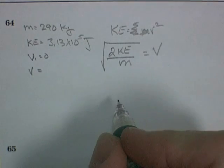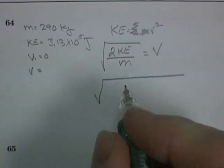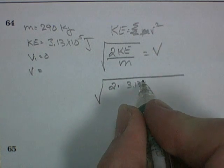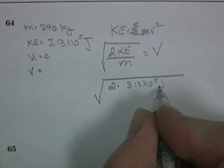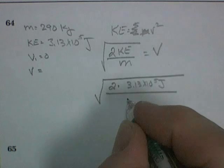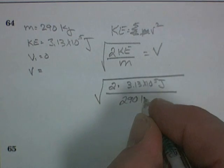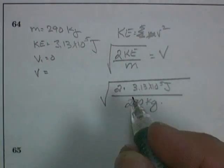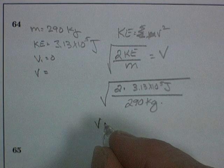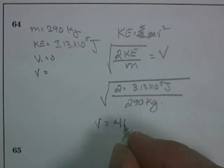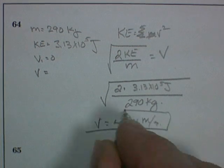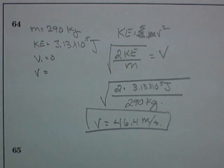And that's going to be equal to our velocity. So the square root of 2 times 3.13 times 10 to the 5 joules divided by 290 kilograms. Calculator time. And if you hit your square root button like you were supposed to, you come up with a velocity of 46.4 meters per second. That looks good.